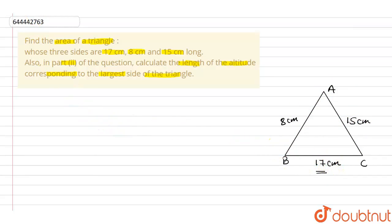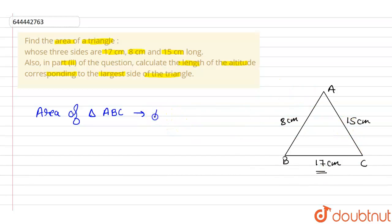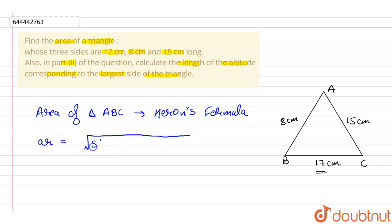First of all, we will be calculating the area of the triangle. Now when three sides are given, we know that the area of triangle ABC can be calculated using Heron's formula, because when three sides are given there is only one method — Heron's formula. It states that the area equals the square root of S(S−A)(S−B)(S−C), where S is the semi-perimeter of the triangle.